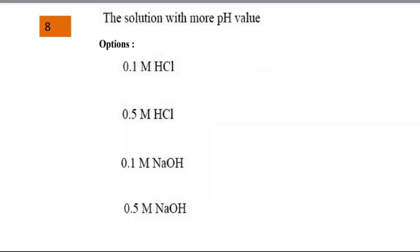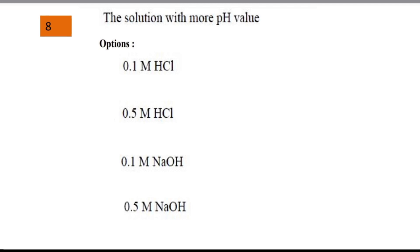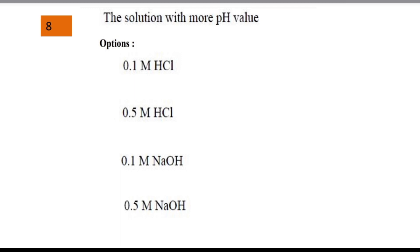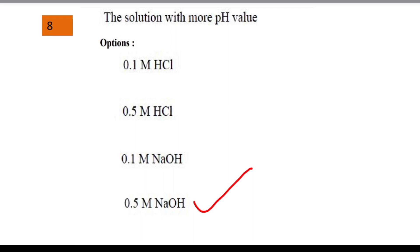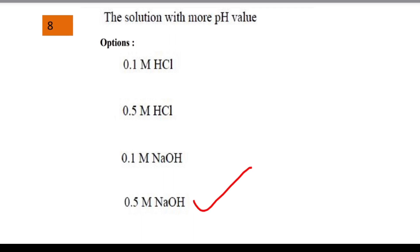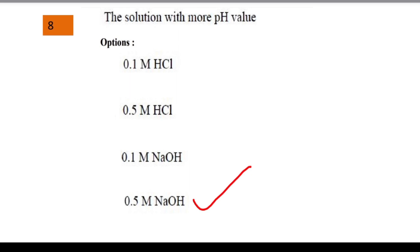Next question: which solution has the higher pH value? The options were 0.1M HCl, 0.5M HCl, 0.1M NaOH, and 0.5M NaOH. The answer is 0.5M NaOH. Acids have lower pH values, so HCl options are eliminated. Between the NaOH options, higher molarity gives higher pH, so 0.5M NaOH has the highest pH. Option 4 is correct.